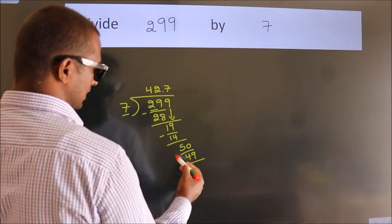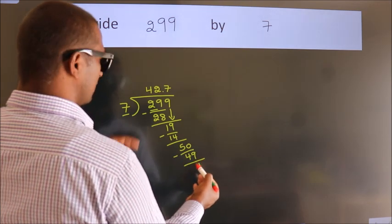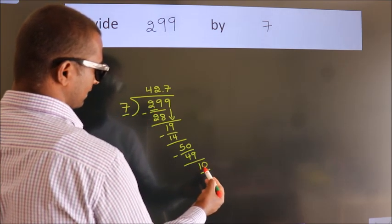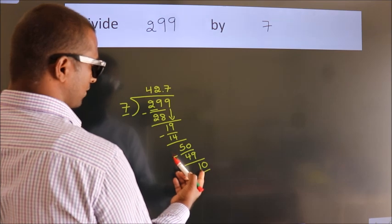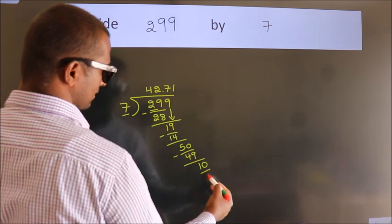Now we subtract. We get 1. After this, we already have the decimal, so directly take 0. So 10. A number close to 10 in 7 table is 7 once 7.